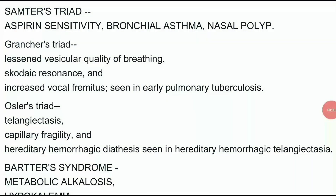Next triad is Grocco's triad. It includes lessened vesicular quality of breathing, skodaic resonance and increased vocal fremitus, which is seen in early pulmonary tuberculosis.